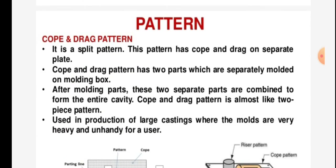Cope and drag pattern: it is a split pattern where the cope and drag are on separate plates. Cope and drag pattern has two parts which are separately molded on a molding box. After molding, these two separate parts are combined to form the entire cavity. Cope and drag pattern is almost like a two-piece pattern, used in production of large castings where the molds are very heavy and unwieldy.